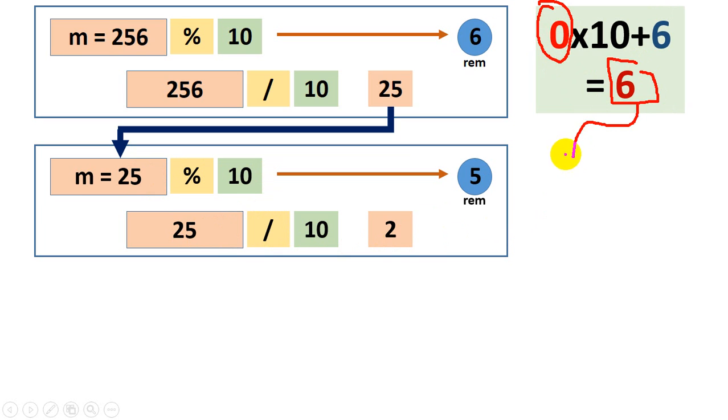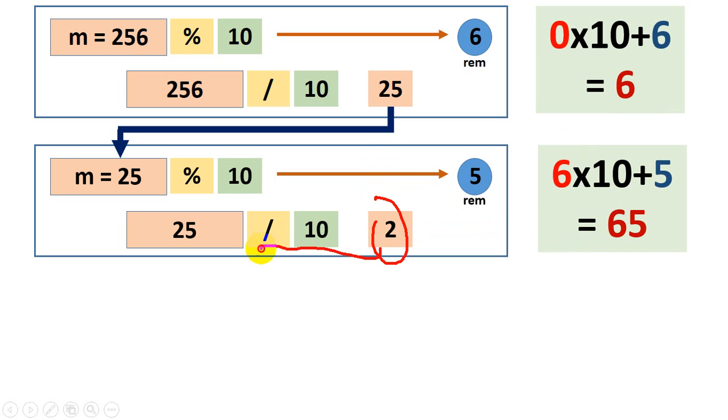Now I will do the same step, now 6 into 10 plus 5. So now I'm doing 6 into 10, so reverse is 6 into 10 plus 5. I get 65. Now I will continue the same process. Now 2 will become m value here.